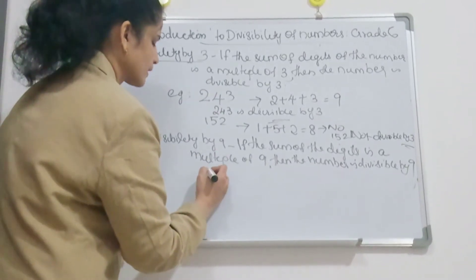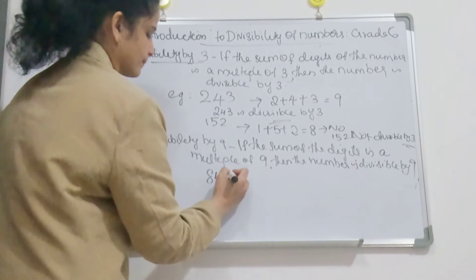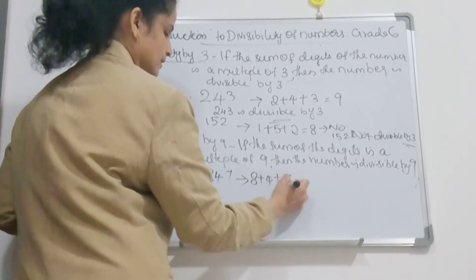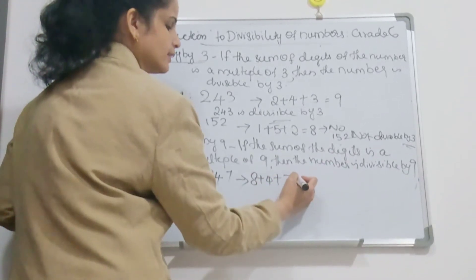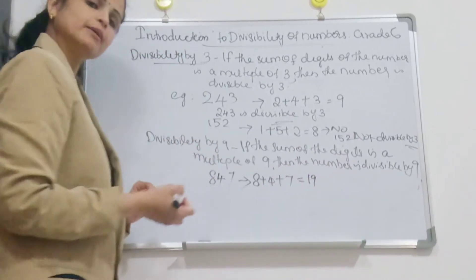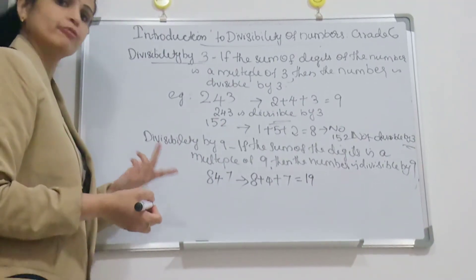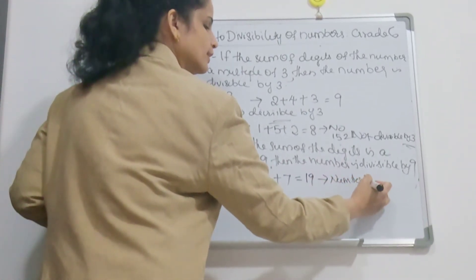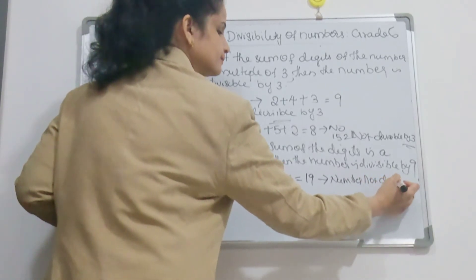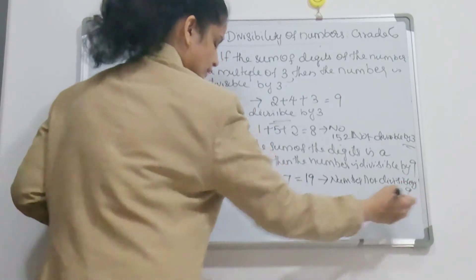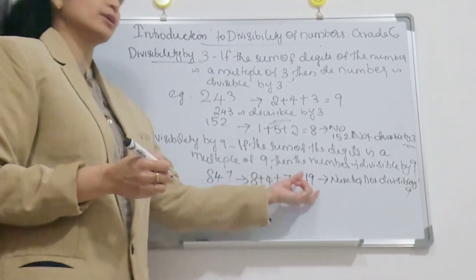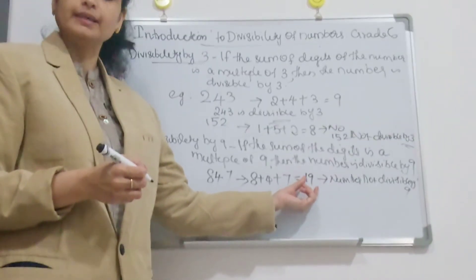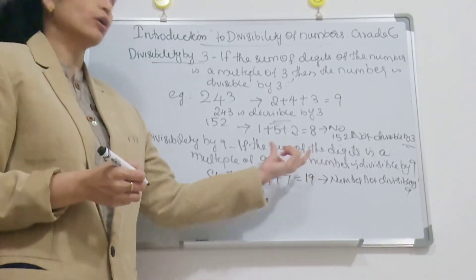Example: 847. You check — 8 plus 4 plus 7. 8 plus 4 is 12, 12 plus 7 is 19. Is 19 a multiple of 9? No, it is not a multiple of 9. So this number is not divisible by 9. You add the digits and check whether the sum is a multiple of 9 — only then is the whole number divisible by 9; otherwise it is not divisible by 9.